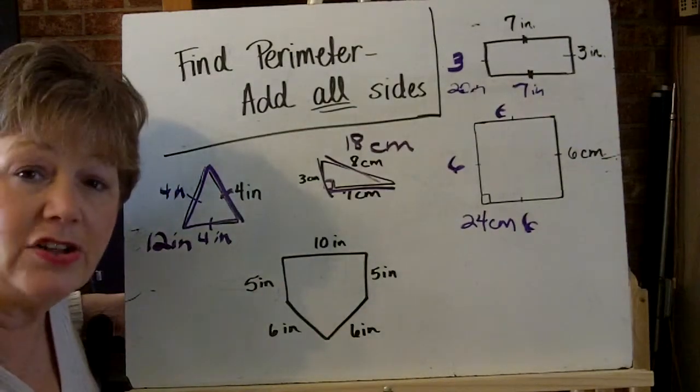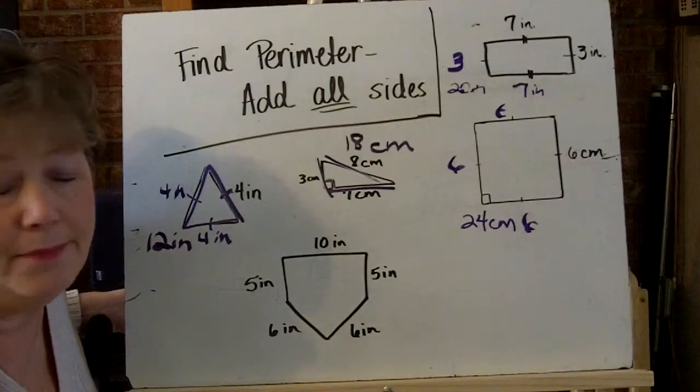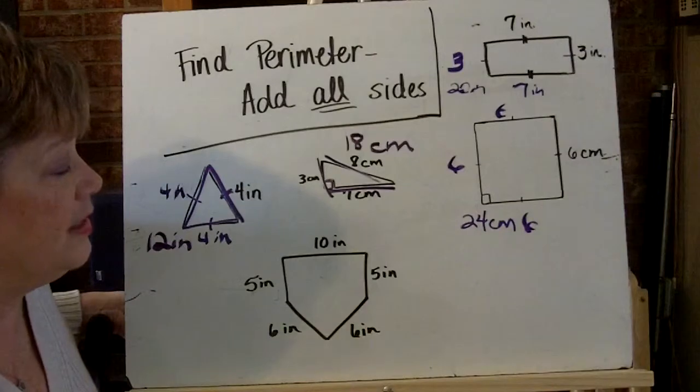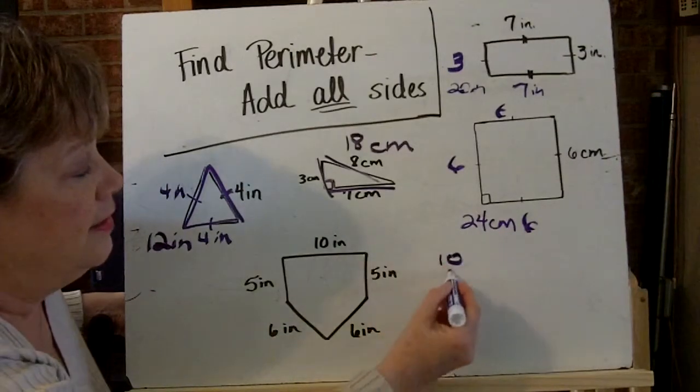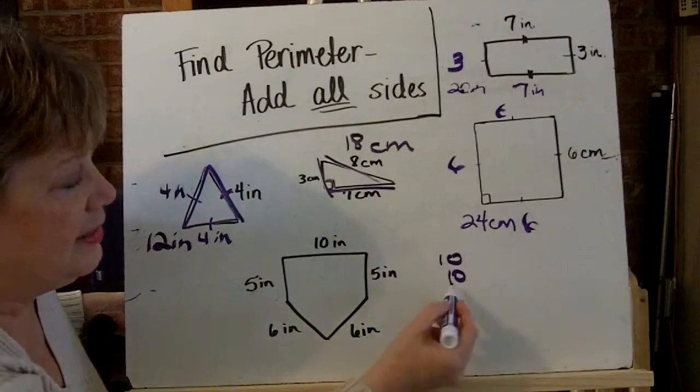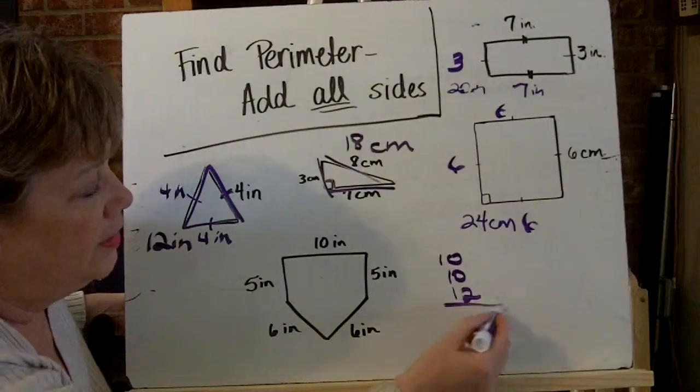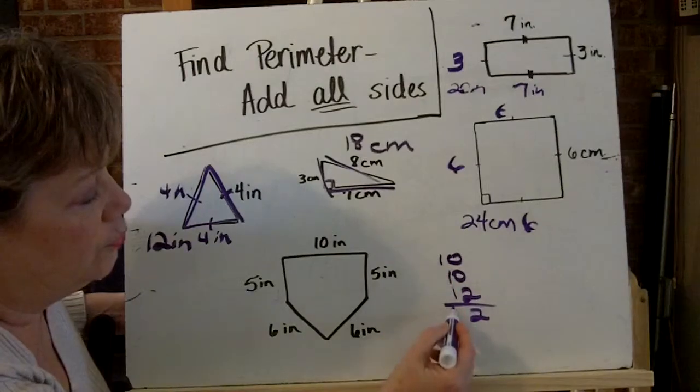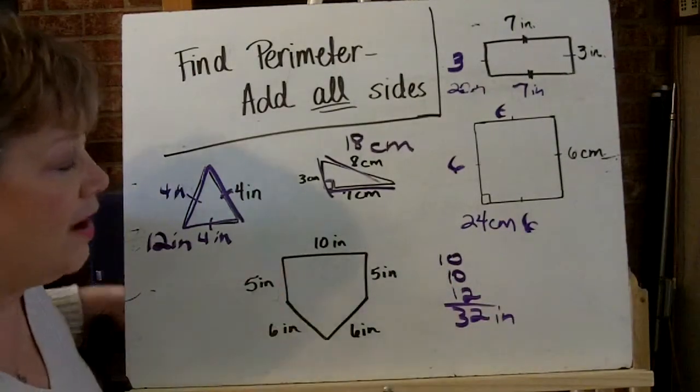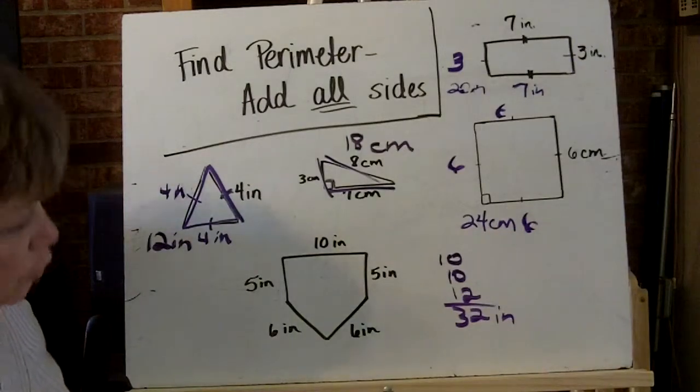Again, I like to look for things I can do pretty easily in my brain. 10 and 5 and 5 is another 10. So I've got 10 plus 10 and then 6 plus 6 is 12. So if I add all that together, the perimeter of this pentagon is 32 inches.